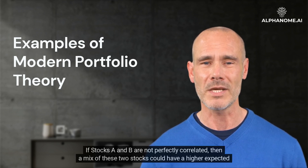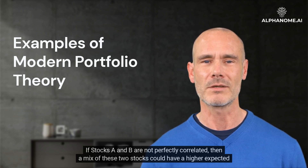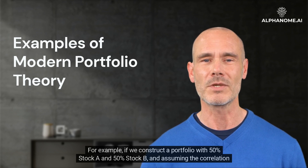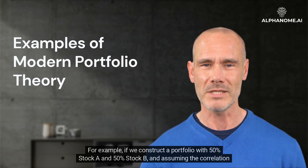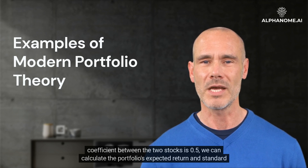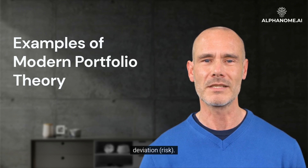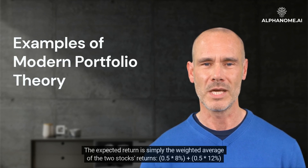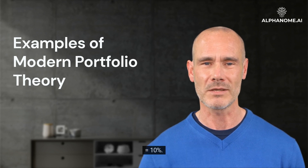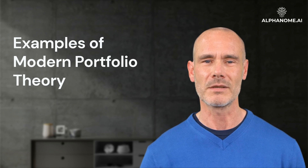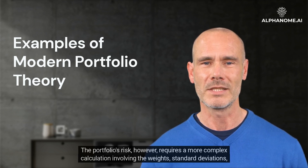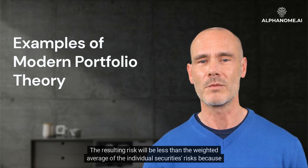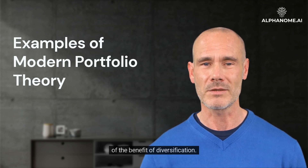If stocks A and B are not perfectly correlated, then a mix of these two stocks could have a higher expected return for a given level of risk than either stock individually. For example, if we construct a portfolio with 50% stock A and 50% stock B, and assuming the correlation coefficient between the two stocks is 0.5, we can calculate the portfolio's expected return and standard deviation. The expected return is simply the weighted average: 0.5 × 8% + 0.5 × 12% = 10%. The portfolio's risk, however, requires a more complex calculation involving the weights, standard deviations, and correlation of the stocks. The resulting risk will be less than the weighted average of the individual securities' risks because of the benefit of diversification.